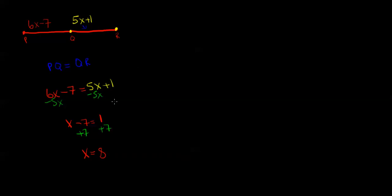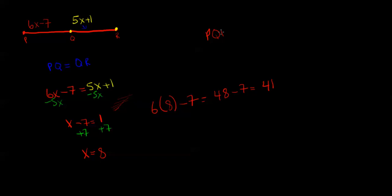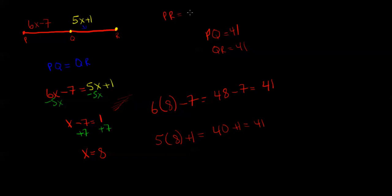Now that we know X equals 8, we plug that back into the equations. PQ equals 6X minus 7: plugging in 8 gives 6 times 8 minus 7, which is 48 minus 7, so PQ equals 41. For QR equals 5X plus 1: plugging in 8 gives 5 times 8 plus 1, which is 40 plus 1, so QR equals 41. Using the Segment Addition Postulate, PR equals PQ plus QR, which is 41 plus 41, so PR equals 82.